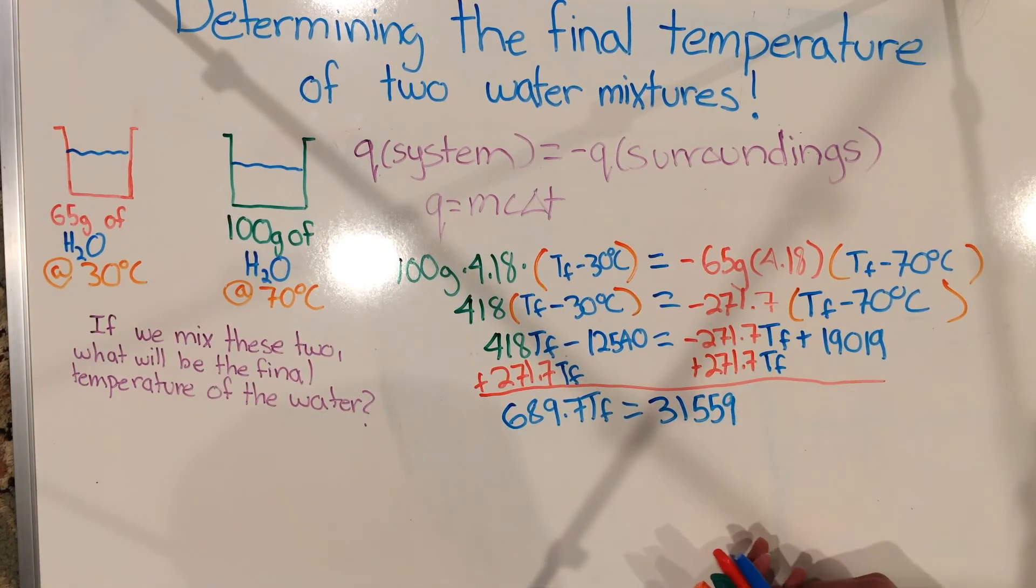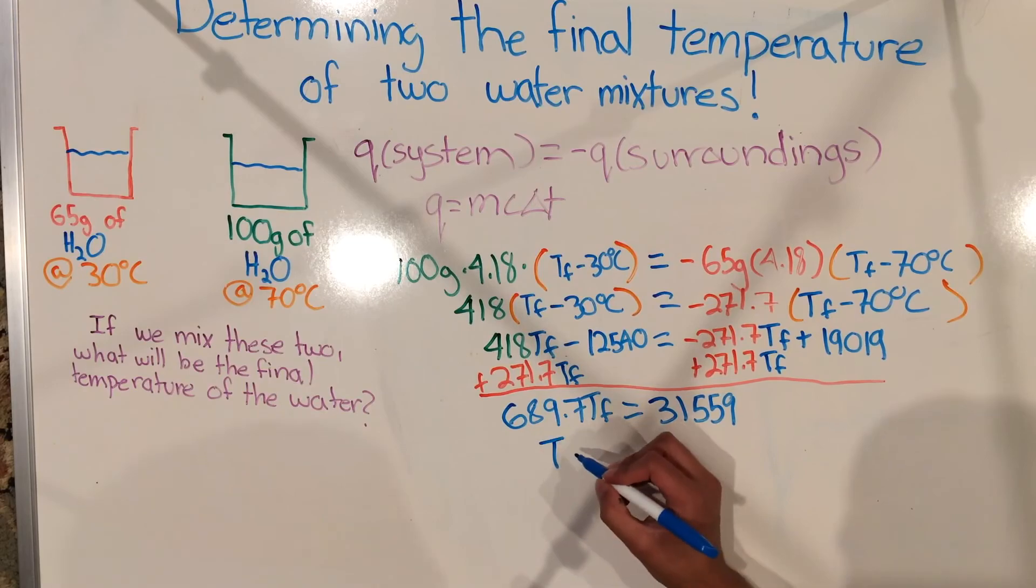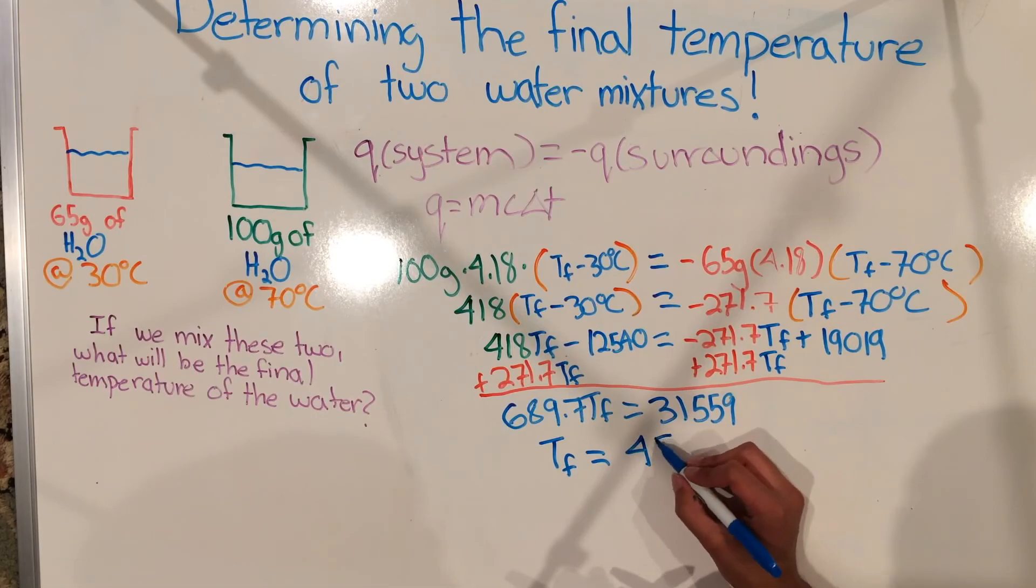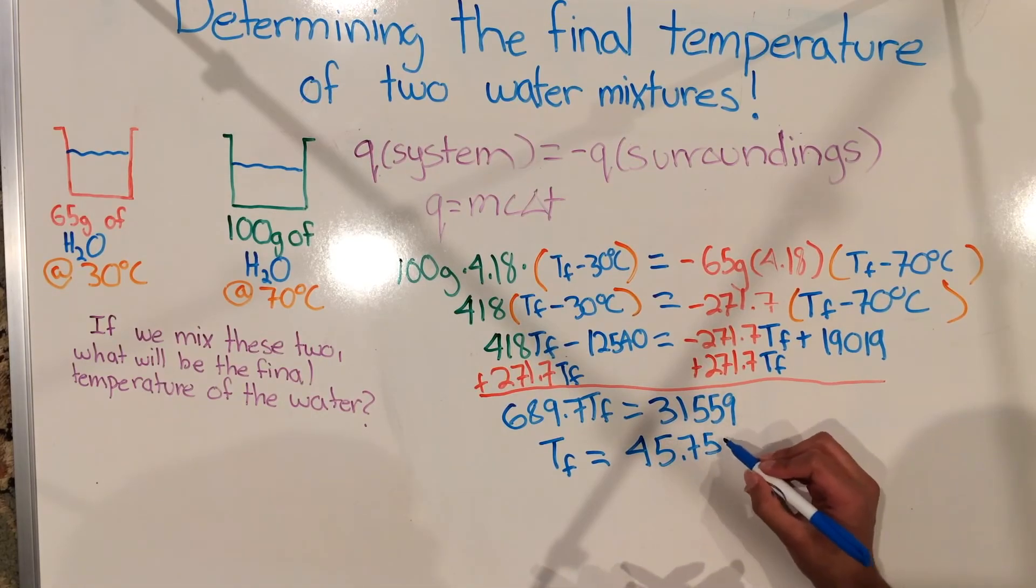After this, we just want to find the final temperature so we isolate that variable and we divide 31,559 by 689.7 and we get that the final temperature is 45.75 degrees Celsius or about 46 degrees Celsius.